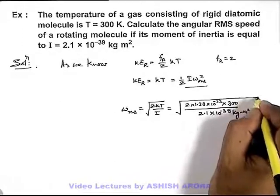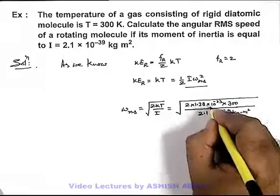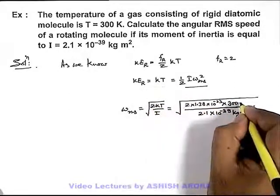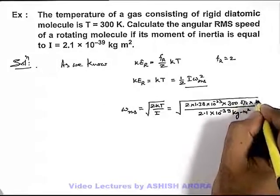We can also use the units in the numerator. So it'll be for Boltzmann constant the unit are joule per kelvin, multiplied by temperature is in kelvin.